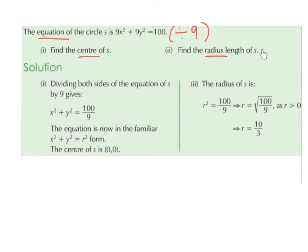For Part 2, find the radius length of S. We have r² = 100/9, so r = √(100/9). The square root of 100 is 10 and the square root of 9 is 3, so r = 10/3. Note that r must be greater than 0 since we cannot have a negative radius length — a negative length doesn't make sense. So the radius is 10/3.